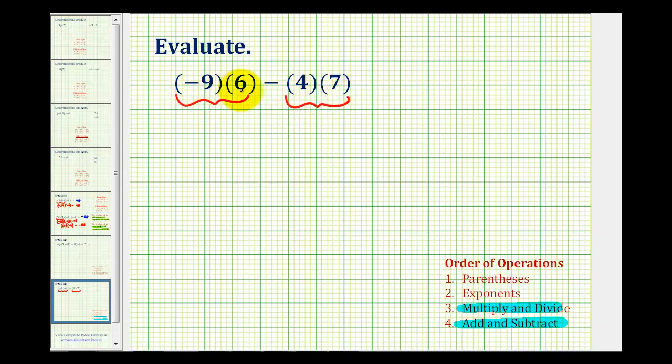Well negative nine times positive six is negative 54. And positive four times positive seven is 28.